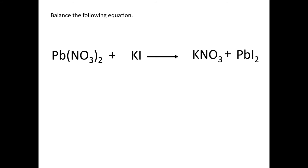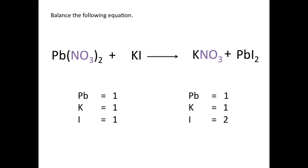In this equation you can see nitrate (NO3) on the reactant side and also on the product side, so we can keep it together and count it as one unit. I'll leave the nitrate for last. On the reactant side: one lead, one potassium, one iodine. On the product side: one lead, one potassium, two iodine atoms. On the reactant side, NO3 is in parentheses with a 2 outside, giving two nitrate groups; on the product side there is one nitrate group.